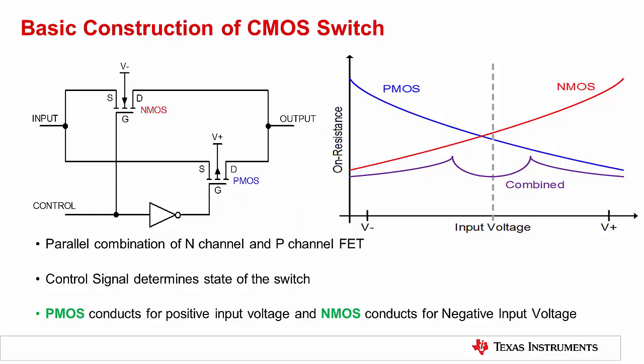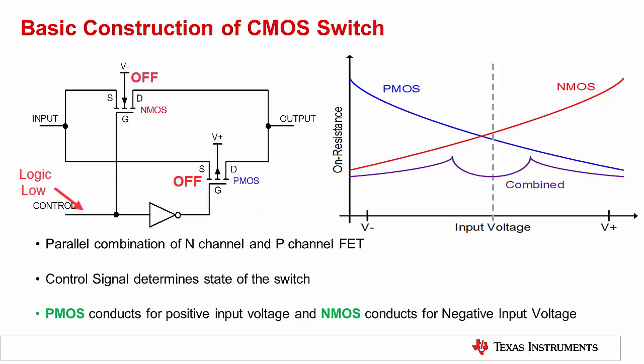The inverter is used to turn on both transistors when a logic high input is applied to the control signal, or turn off both transistors with a logic low input. Several CMOS switches can be combined with some simple logic control to create a multiplexer. Although the CMOS switch input pin and output pin are interchangeable, for simplicity, we will assume the source pin as the input and the drain pin as the output of the CMOS switch.